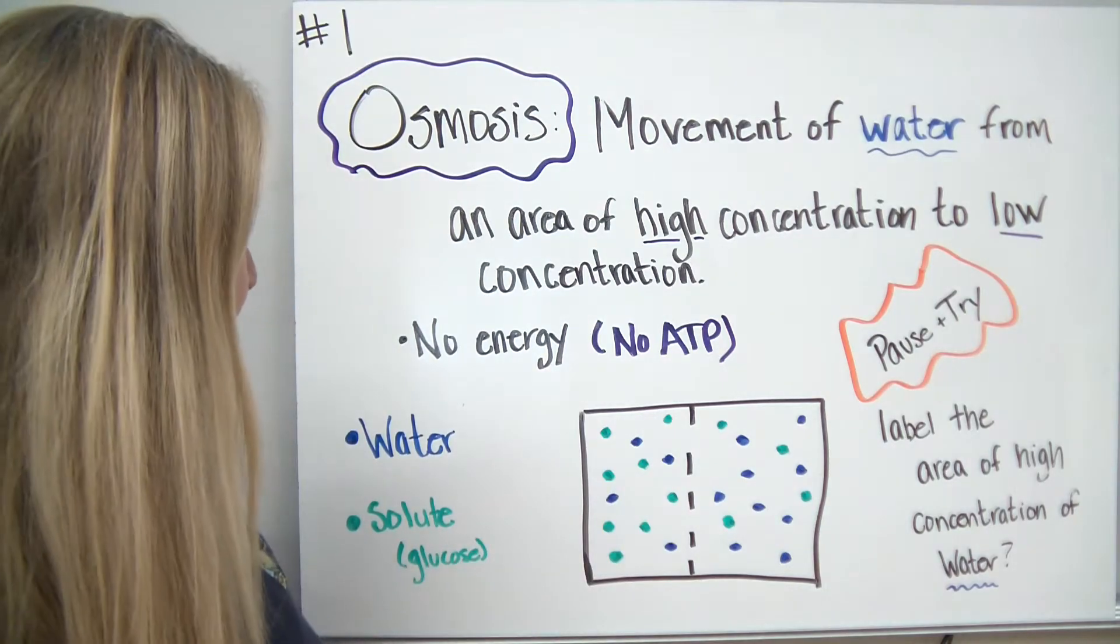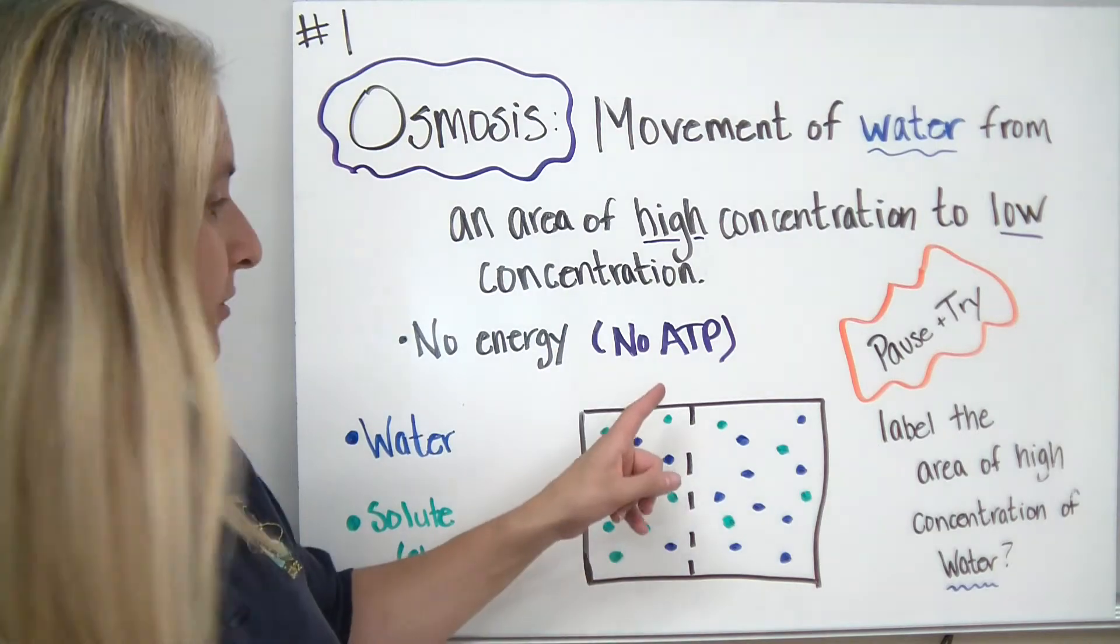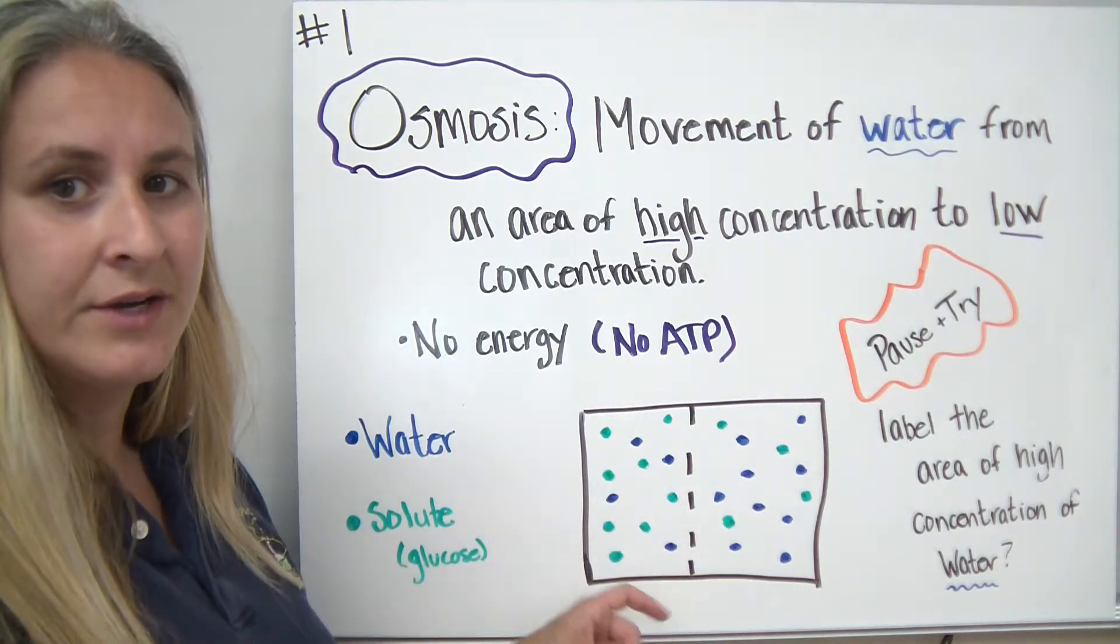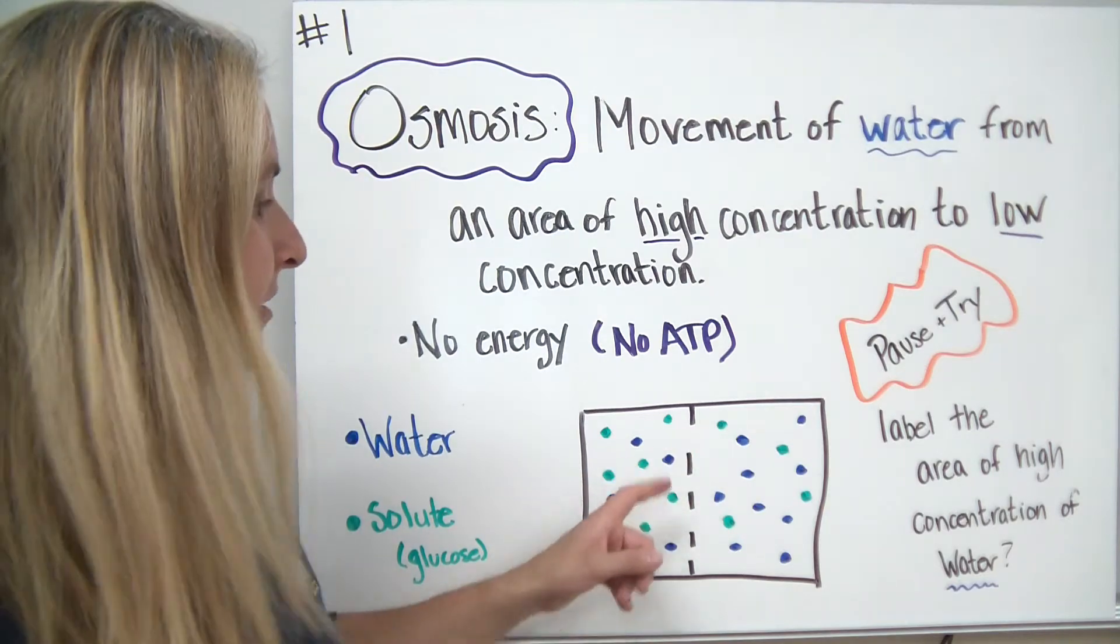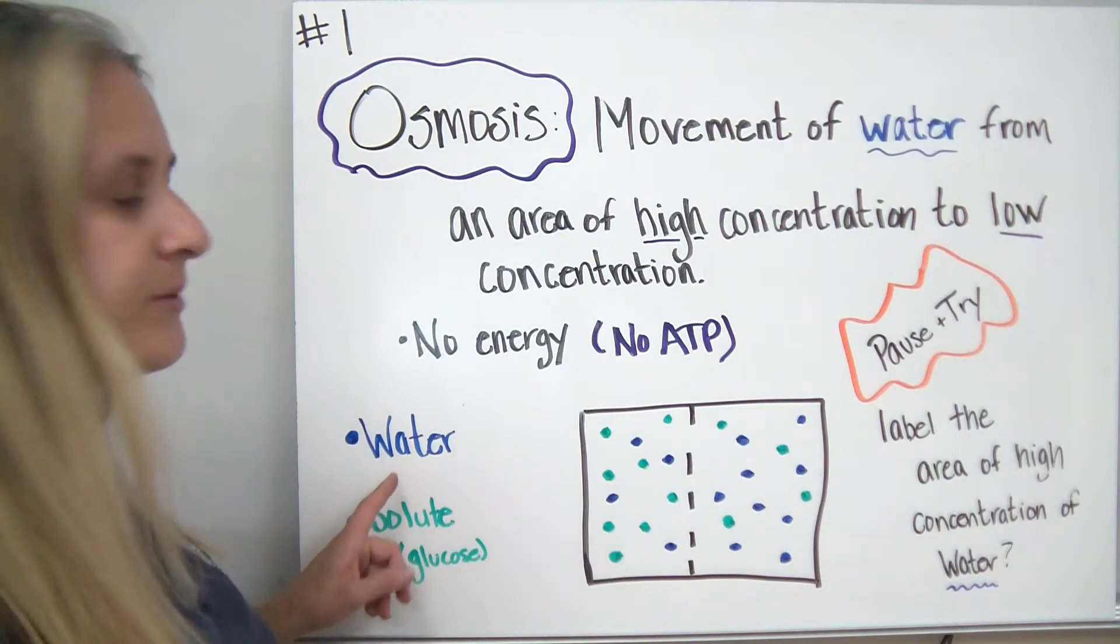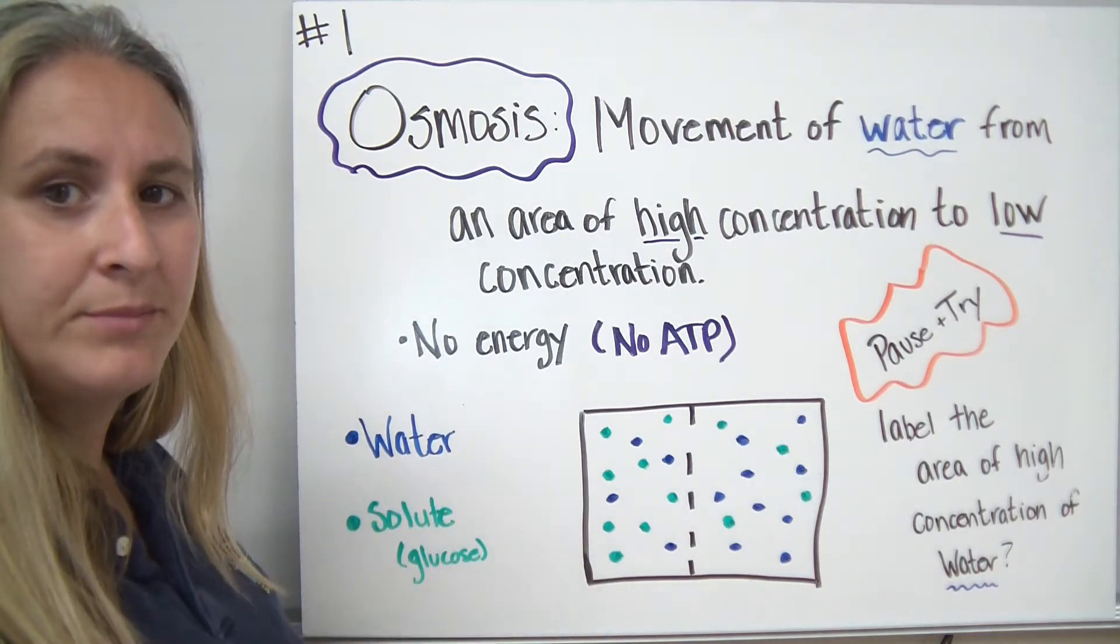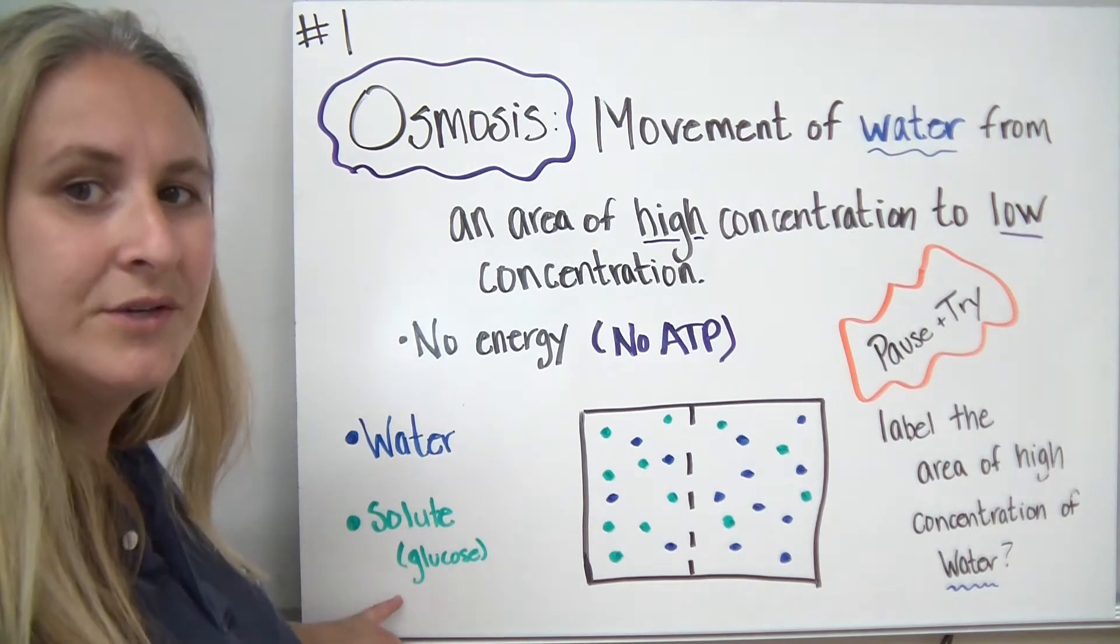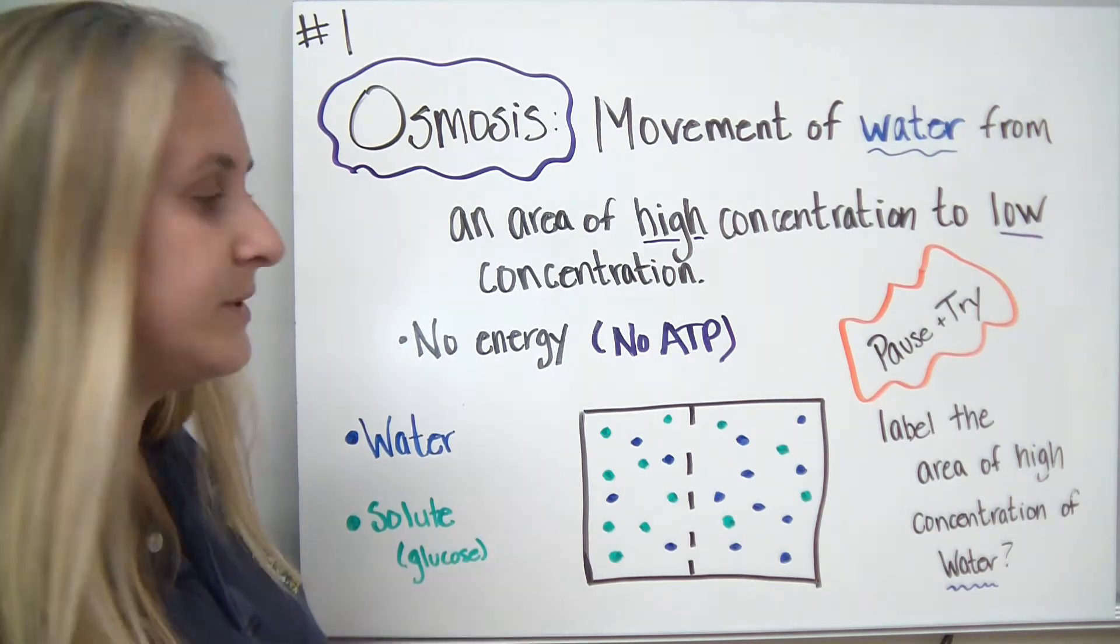Let's take a look at a diagram. In this diagram, it's representing a simulated cell. Remember that dashed or dotted line represents the cell membrane with the spaces in between representing the pores between the lipid bilayer. We have two different molecules: water represented by blue dots, and a solute, the thing that gets dissolved in the solution, glucose being green.